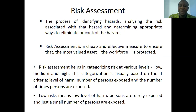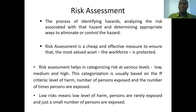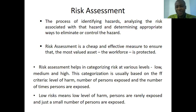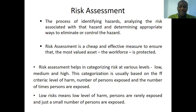Risk assessment helps in categorizing risks at various levels. It is able to help us know whether risk is low, high, or medium. This categorization is usually based on the following criteria: level of harm, number of persons exposed, and the number of times persons are exposed. Low risk means a low level of harm, persons are rarely exposed, and just a small number of persons are affected. For instance, if last year you set a KPI for accidents to be reduced to maybe three, and indeed there was no accident last year, then your risk of getting an accident might be categorized as low.